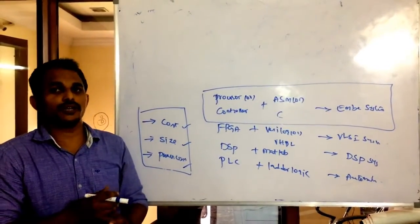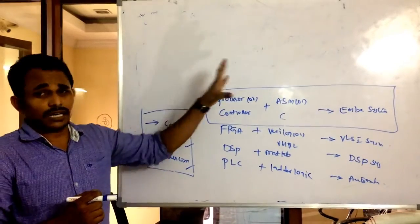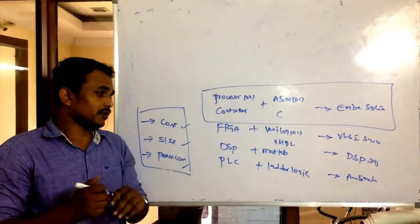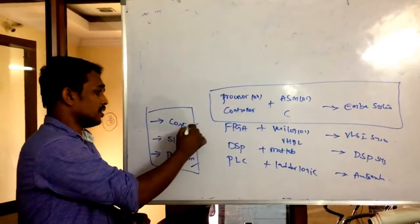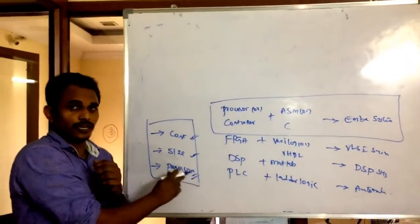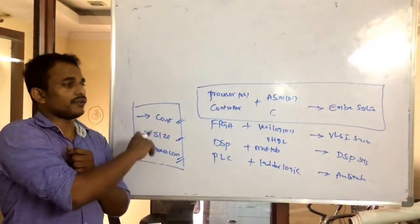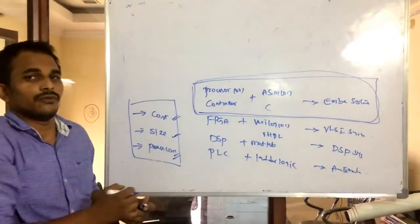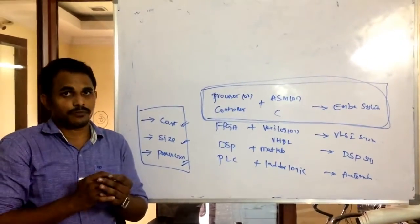Electronics is always running based on commercial things. Which will work out for any electronic system? People will concentrate on these three important parameters compulsory. For achieving these three, I will suggest embedded system is the best domain for preparing any application.